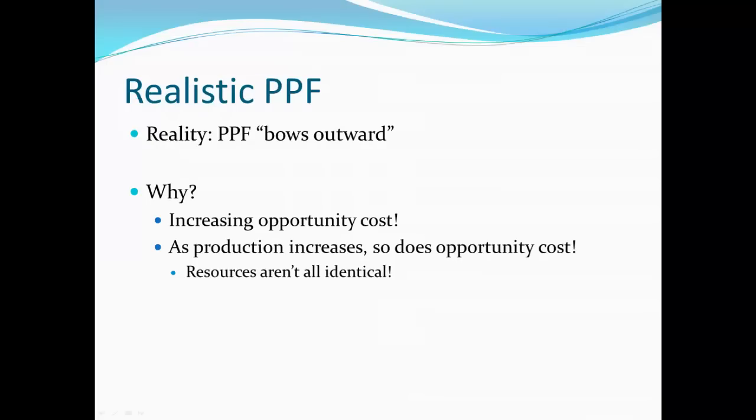Now in reality, the production possibility frontier is not a straight line. It actually bows outward. We'll show what that looks like in a minute. The question is why? Why wouldn't it be a straight line? The answer is increasing opportunity cost, which will become clearer with an example. The reality seems to be that the more you produce something, the higher your opportunity cost tends to go. The reason being that resources aren't all identical. Let's make this concrete.